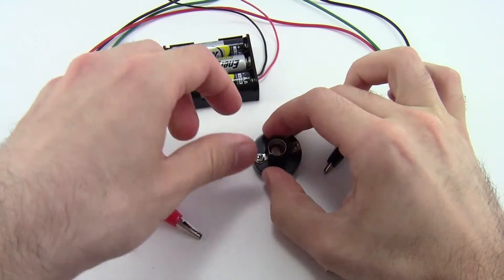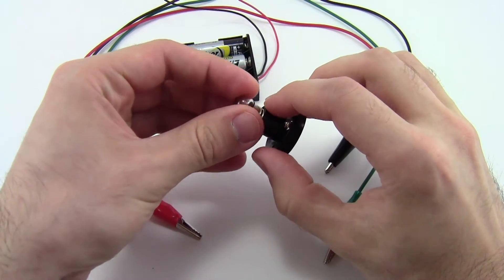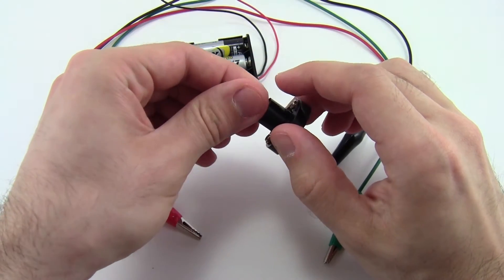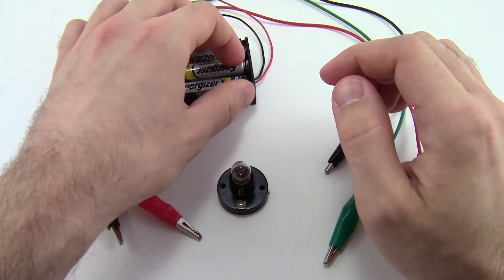Next, just screw the light bulb into the base, and now you are ready to connect everything with the alligator clips.